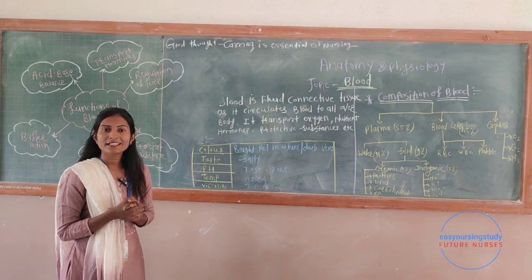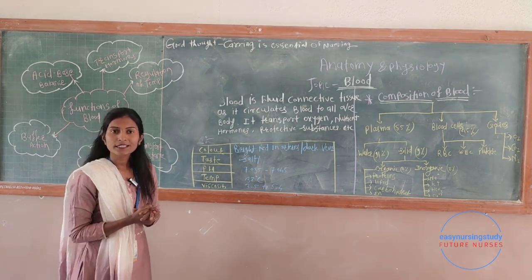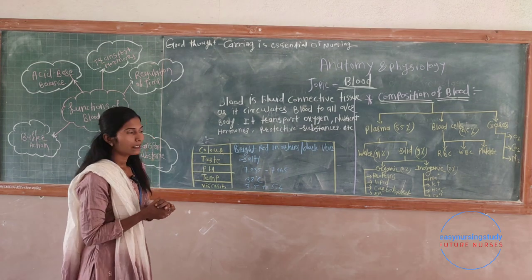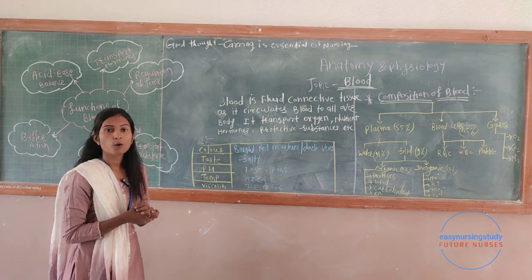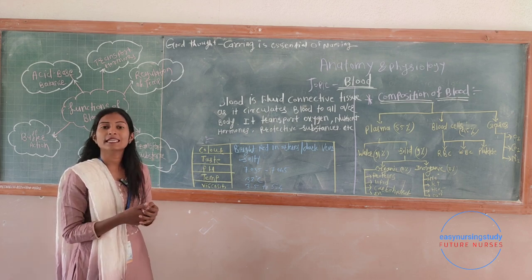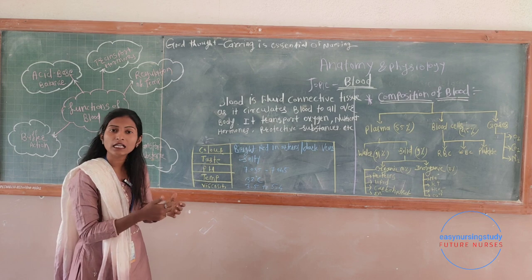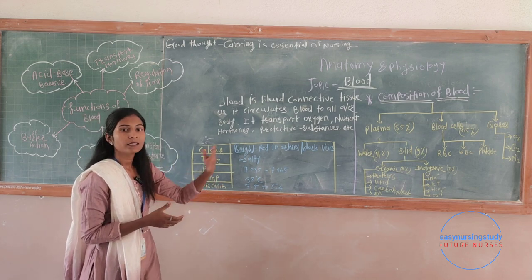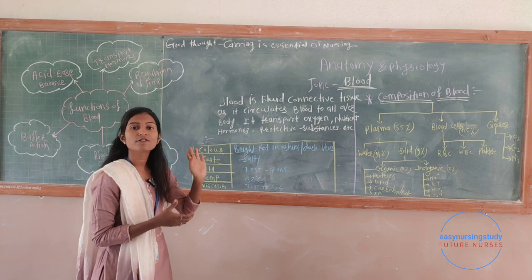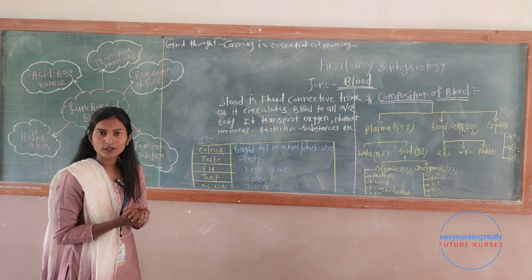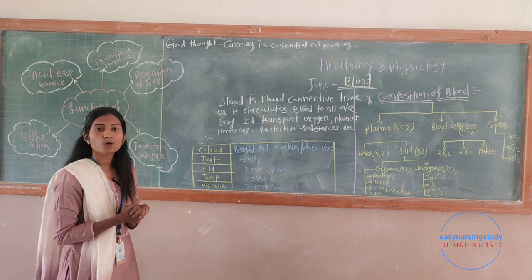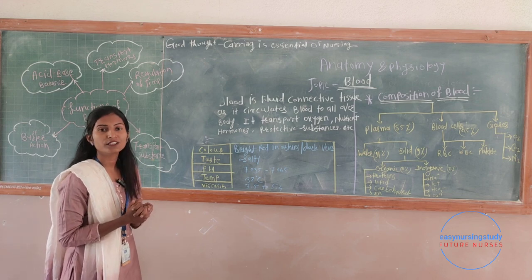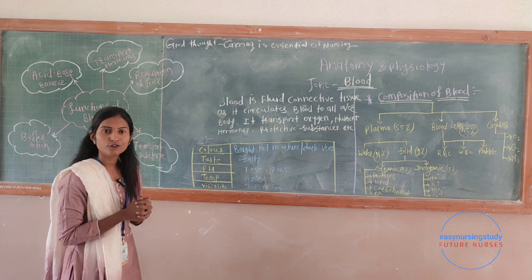So friends, today we learned about blood — the introduction, the definition (blood is a fluid connective tissue that circulates all over the body and transports important substances like oxygen, hormones, nutrients, and other protective substances), the properties of blood, the composition of blood, and the functions of blood — including acid-base balance, transport of substances, transport of hormones, buffer action, blood clotting, and regulation of temperature.